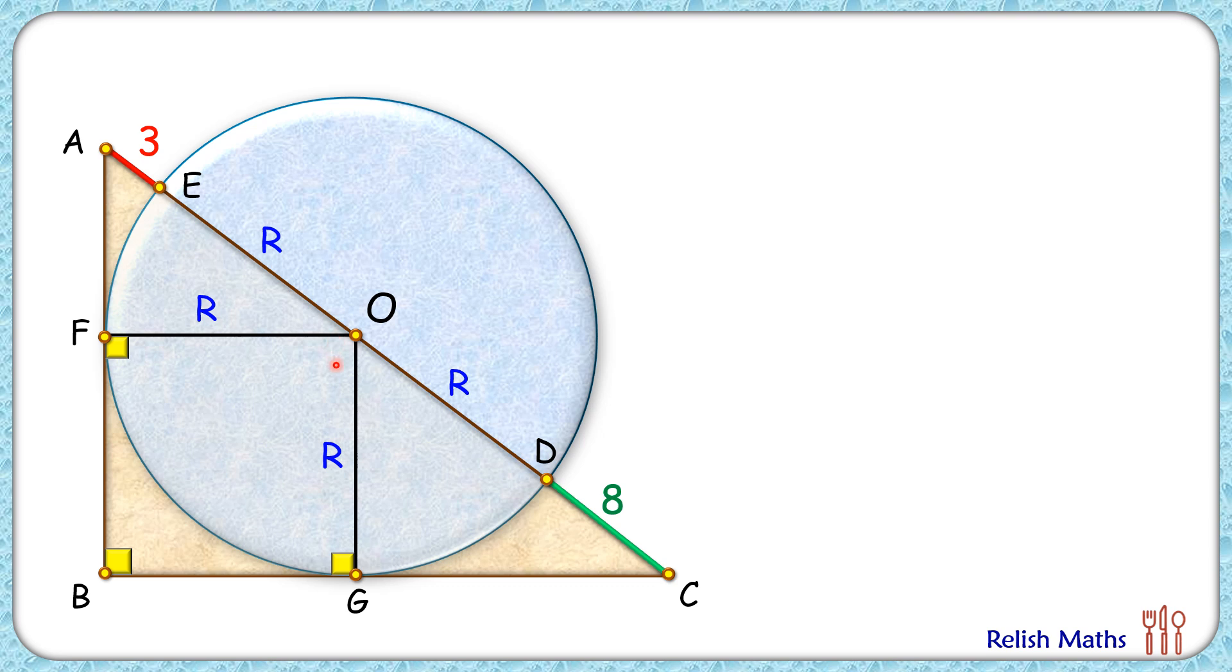Now here this angle will be 90 degrees. The figure formed is a square, and thus BG will be R centimeters and FB will be R centimeters. Let's assume AF is x centimeters and GC is y centimeters.